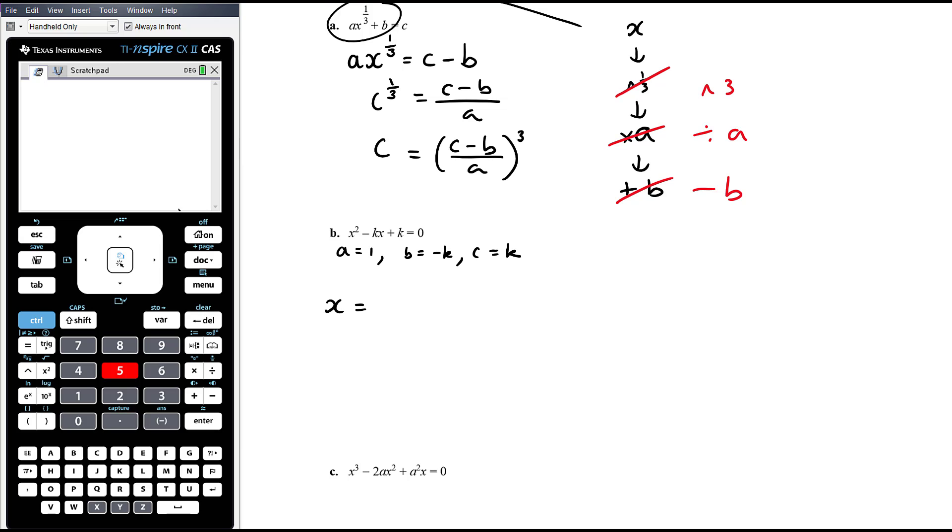So quadratic formula x equals negative b, so negative negative k, that's k, plus or minus the square root of b squared, which would be k squared. Negative k all squared is still just k squared. Minus 4 times a and times c, all over 2a.